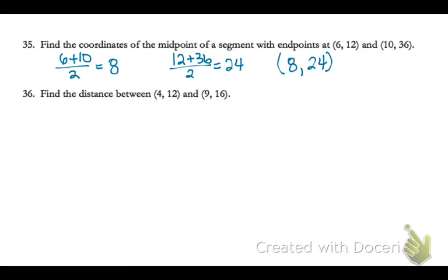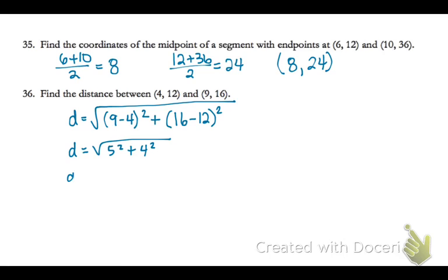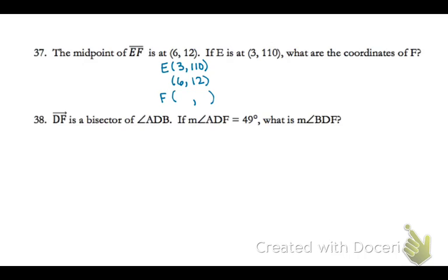For 36, you're going to use the distance formula — on the test you can use the formula sheet, so you don't have to have these memorized. Plug in the difference of your X's squared plus the difference of your Y's squared. The midpoint of EF — we have E listed on top and the midpoint in the middle. Your midpoint is equal distance from each endpoint, so if you go up 3 you have to go down 3 in the opposite direction. For your Y value, you go up 98 so you have to go down 98. So your other endpoint F is at (9, negative 86).